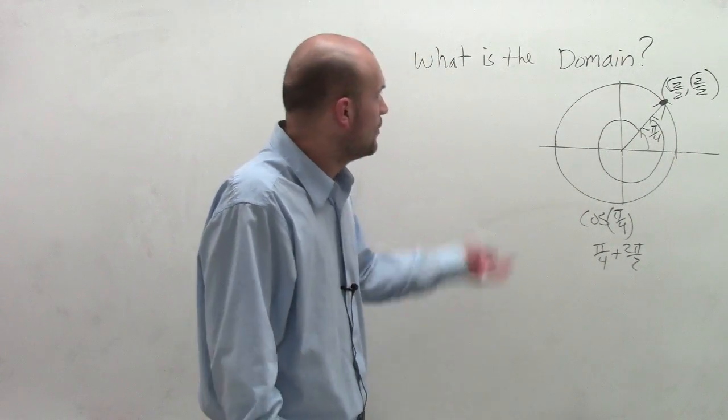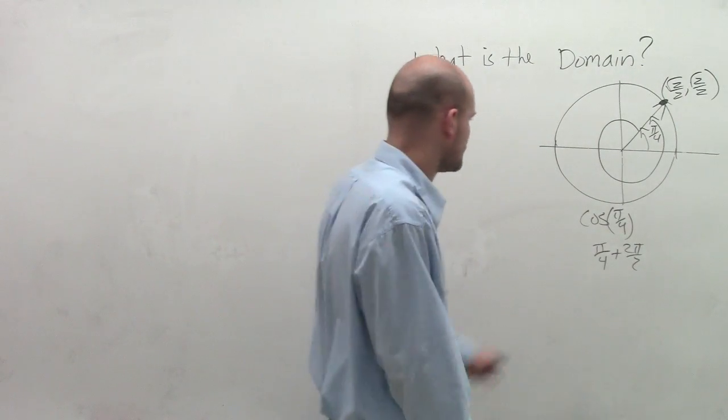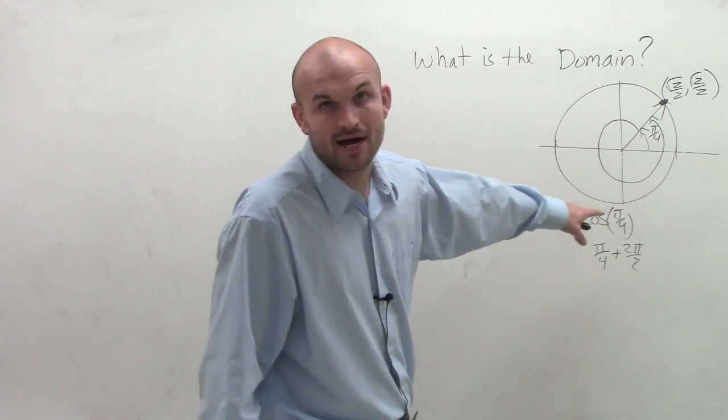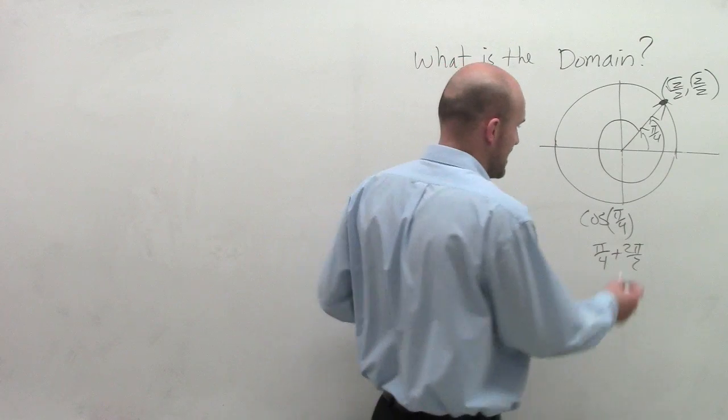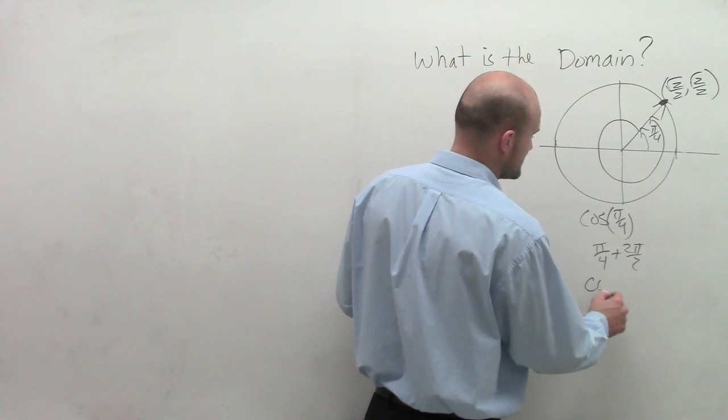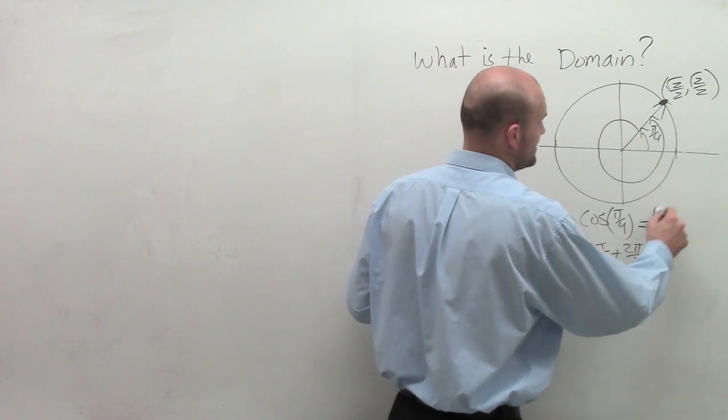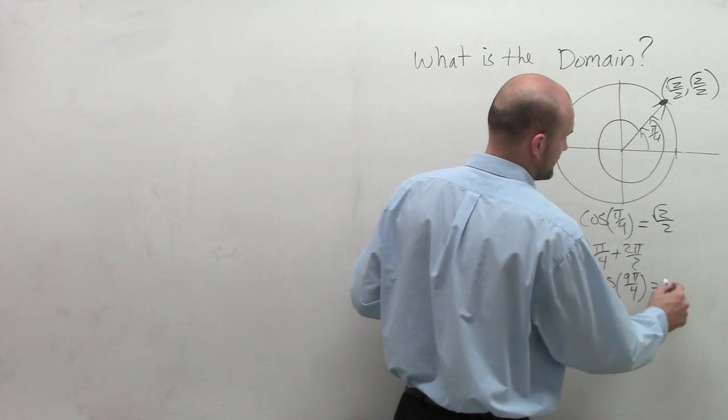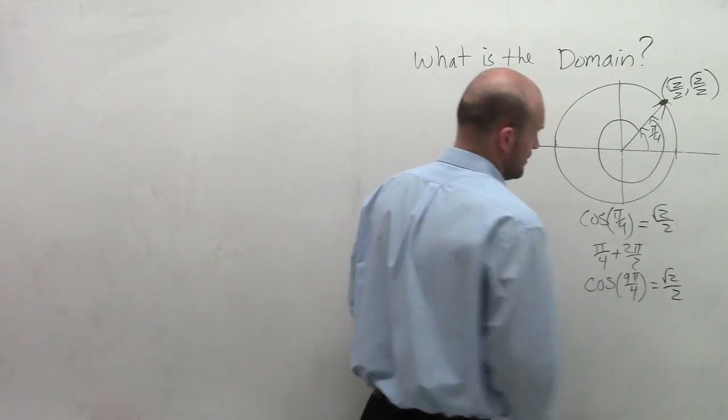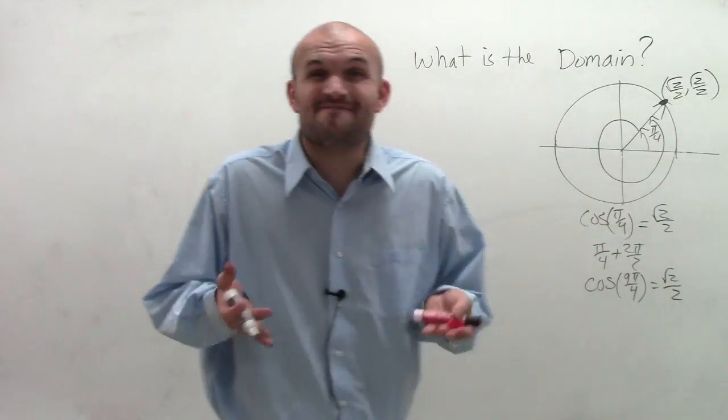So when I add 2 pi, which would be like 8 pi over 4, what I end up getting is, when I add 8 pi over 4, I end up getting 9 pi over 4. And what we notice is cosine of 9 pi over 4 is still equal to the same value.